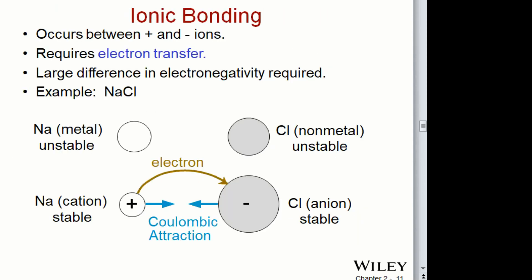Ionic bonding occurs between positive and negative ions, it requires electron transfer, and there's a large difference in electronegativity required. The example is sodium chloride — sodium is the metal, chlorine is the non-metal. They're both highly reactive in their pure state, but when combined it becomes very stable and you can eat it. This is called Coulombic attraction, where the positive and the negative attract and you have the electron sharing.